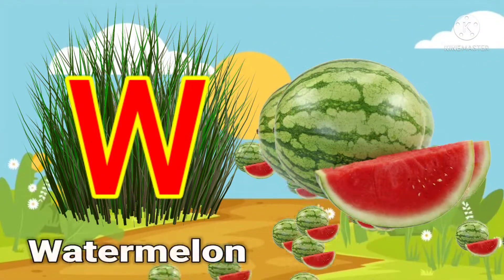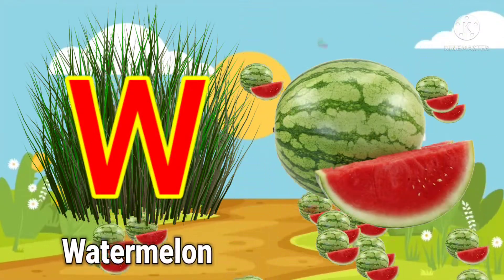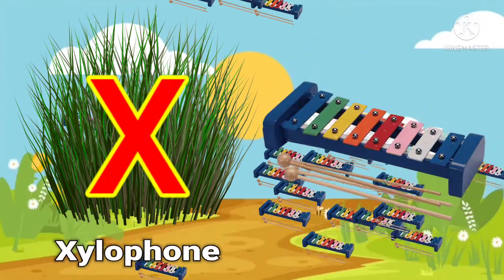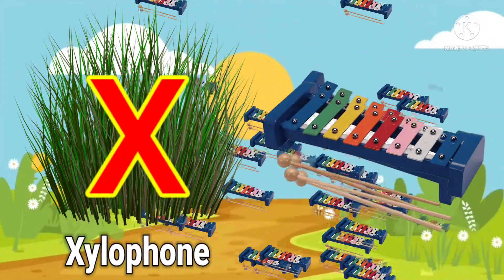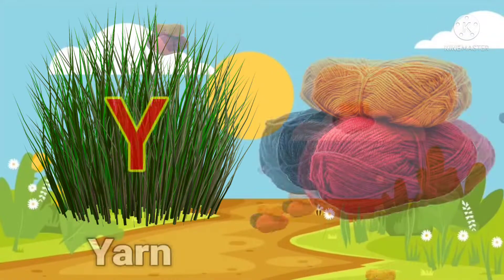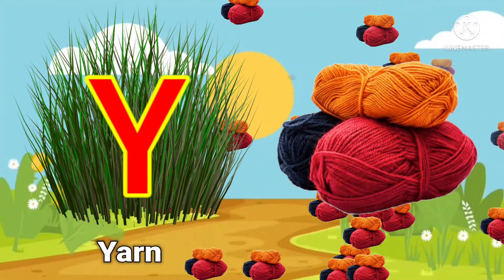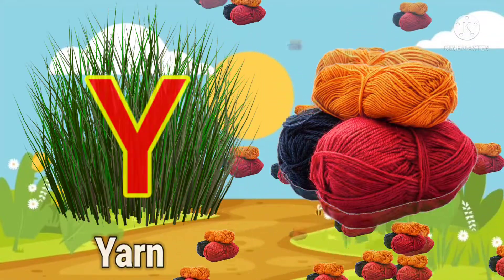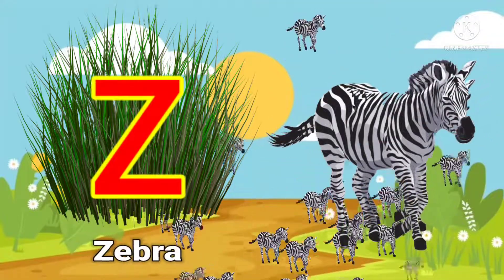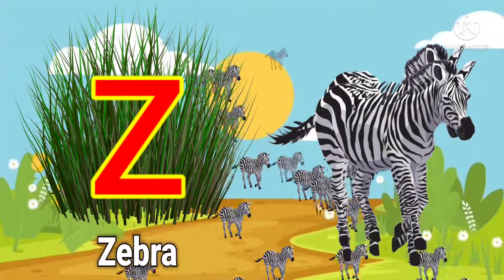W for watermelon, X for xylophone, Y for yarn, Z for zebra.